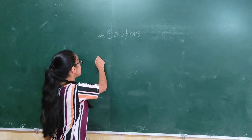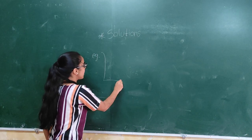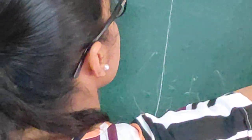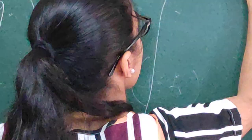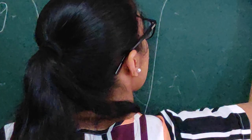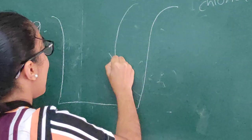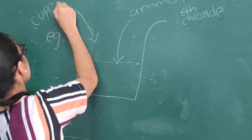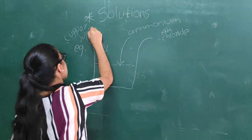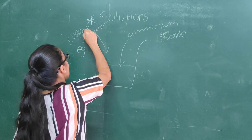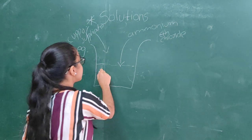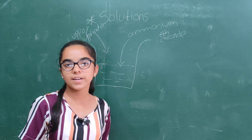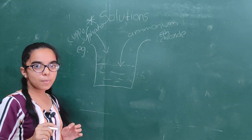We have one example of a solution. We will take a beaker, and in that beaker we will add ammonium chloride. We have water in this beaker and we will also add copper sulphate. Copper sulphate and ammonium chloride mix uniformly with the water, so we get a solution of ammonium chloride and copper sulphate in water.